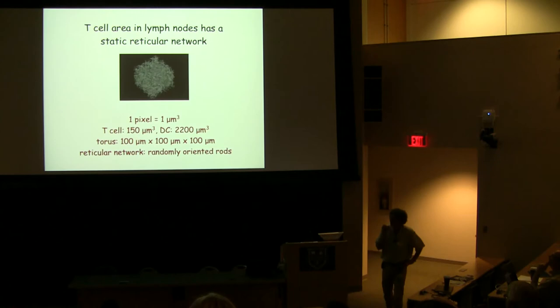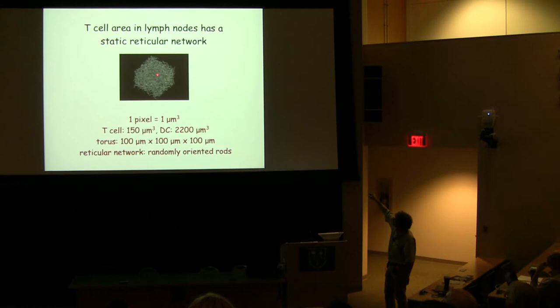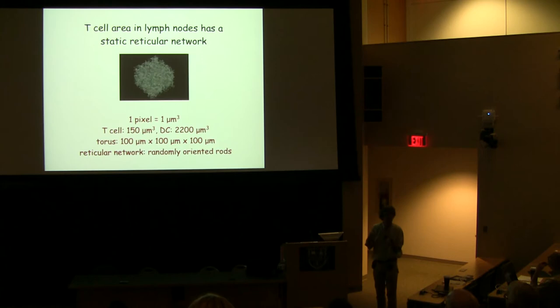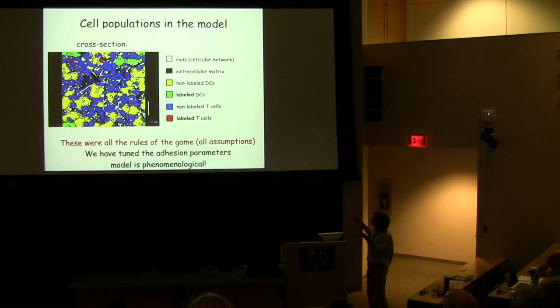The last detail: the T cell area in a lymph node is not just empty space or fluid cells. There is a static reticular network there, which we model by adding a large number of randomly oriented fixed rods into the system that don't move. We try to have the correct density of these rods, and all these numbers also give you the size of the simulated volume. If we leave out these rods, you will get global motion in your system — you need obstacles for cells to not form streams all going in the same direction.